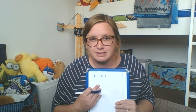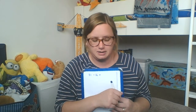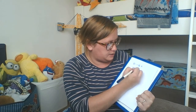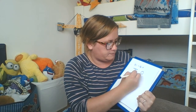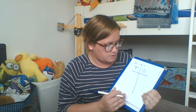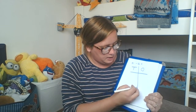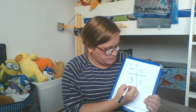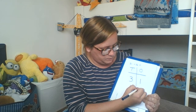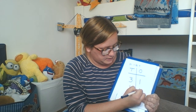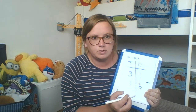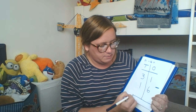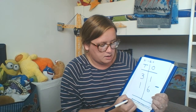First number sentence: we've got 31 subtract 16. Set it out as I normally would — tens and ones. Then we've got 31: 3 tens, 1 one, and then 16 which is 1 ten and 6 ones, and we've got to put our subtraction symbol in there, and then our nice big equal sign.